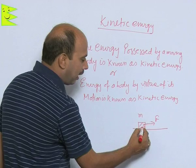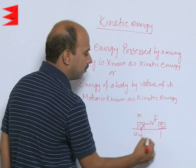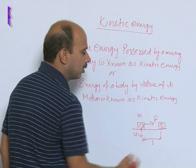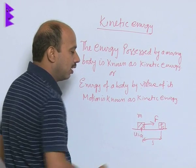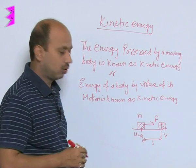When force f is applied, this object moves to distance s. When it moves to distance s here, its velocity is v, that is v is the final velocity.